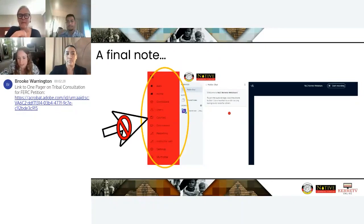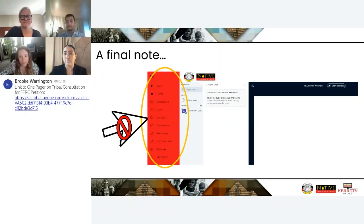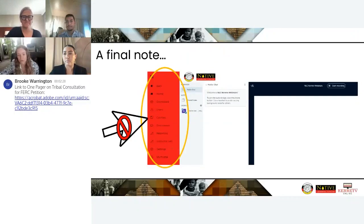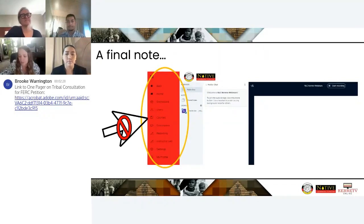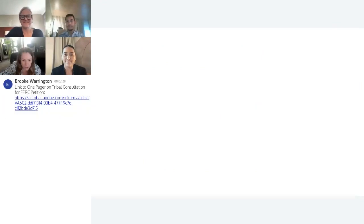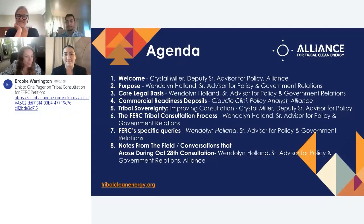Just a final note before I hand it off to the Alliance for Tribal Clean Energy. On this platform, if you click on that red menu panel on the left side of your screen, it pulls you out of the virtual class and out of the webinar. It's very easy to rejoin — just click the green banner again. I just want to give you a heads up if you're clicking around. All right folks, let me switch to your presentation and hand it off to you now, Wendelin.